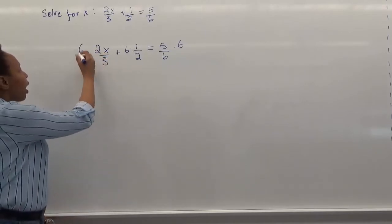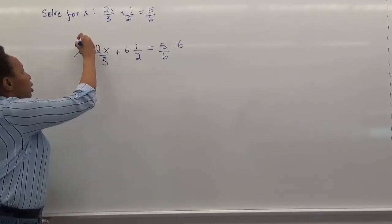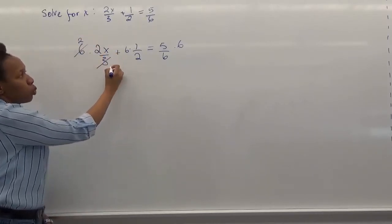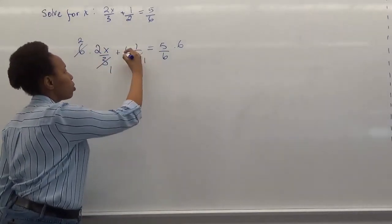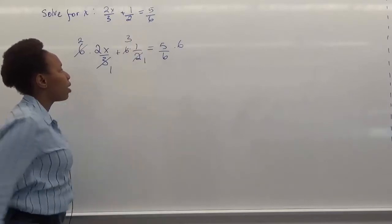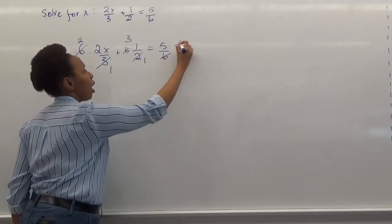So now by doing this, we have 3 cancels here and becomes 2, and 3 cancels here and becomes 1. Here we have 2 cancels here becomes 1, and 2 cancels here becomes 3. And then 6 cancels 6 out totally.